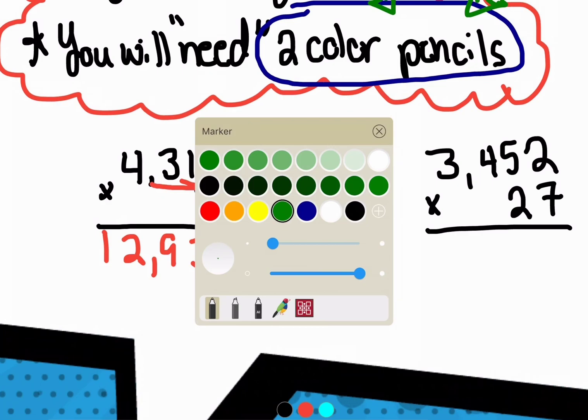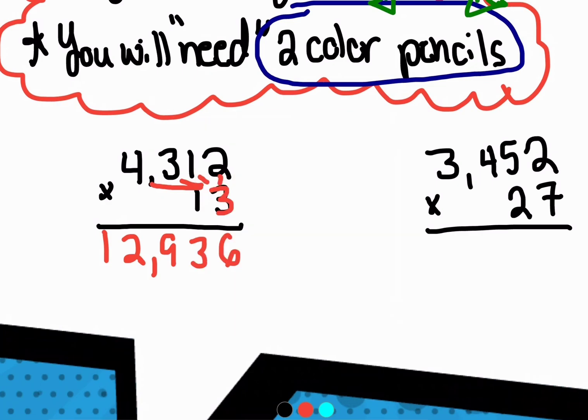Change it to a different color. I'll use the green again. Multiply it by 10. I'm skipping a line. I'm putting a zero. This is going to be easy. One times two is two. One times one is one. One times three is three. And one times four is four.